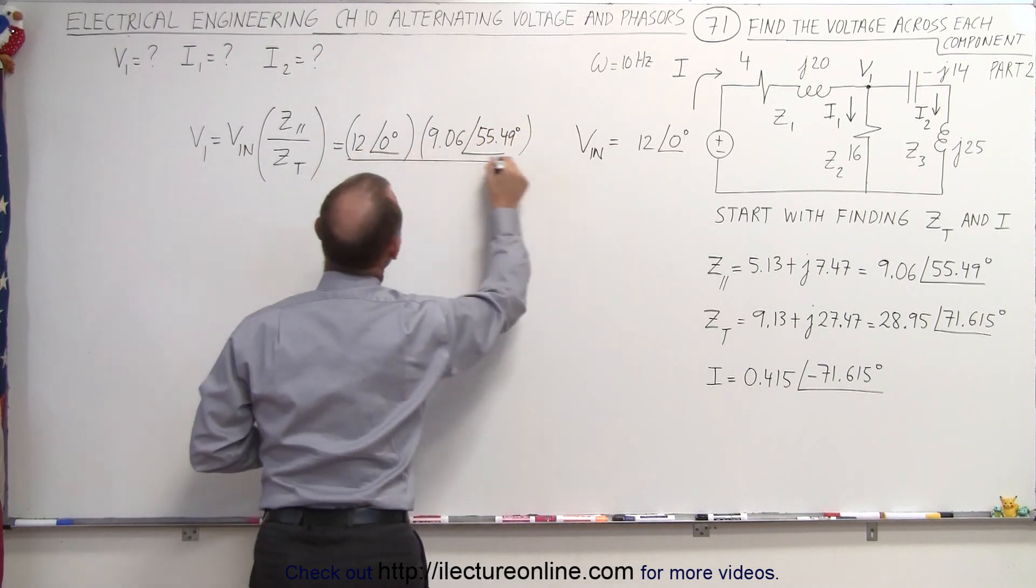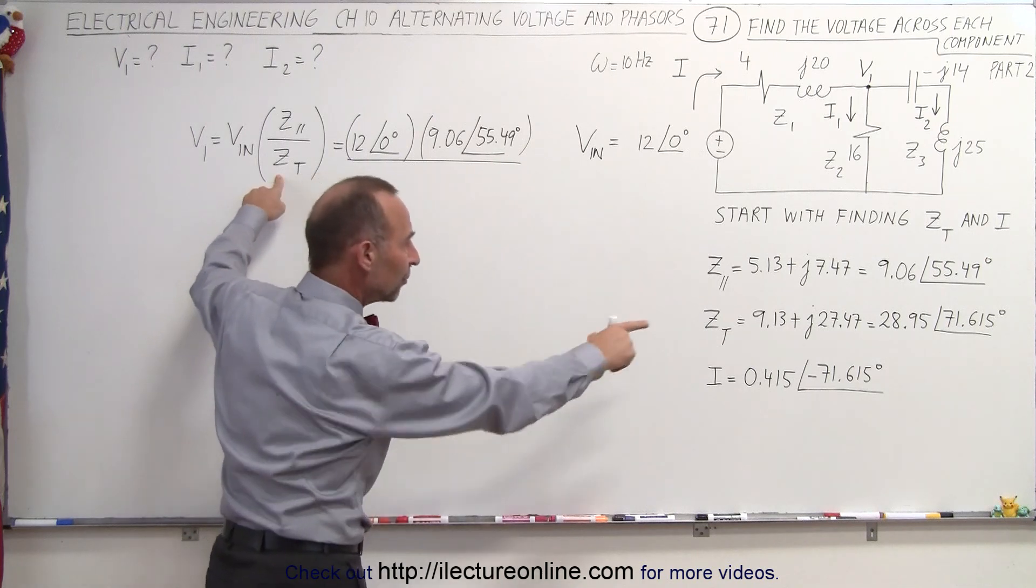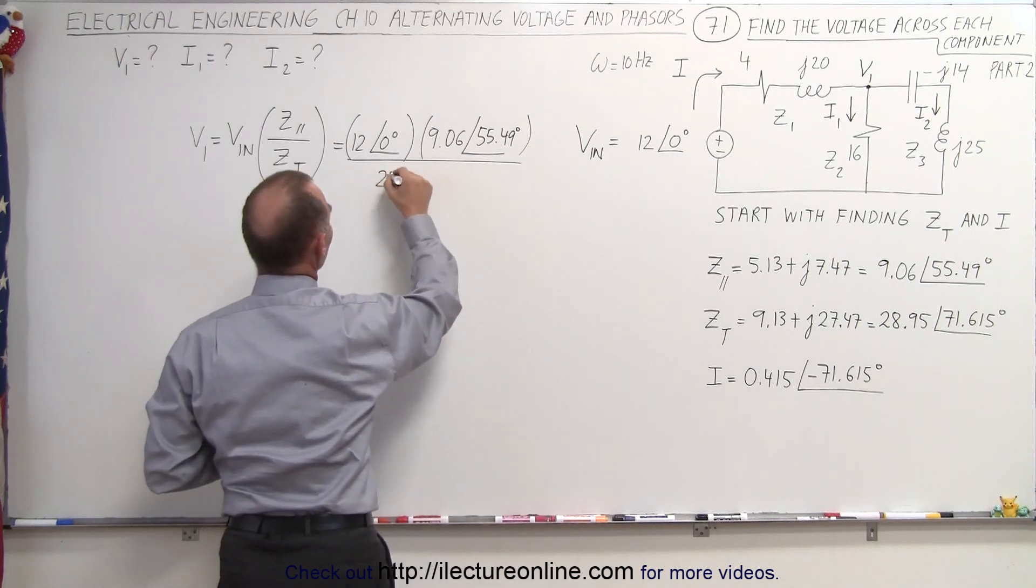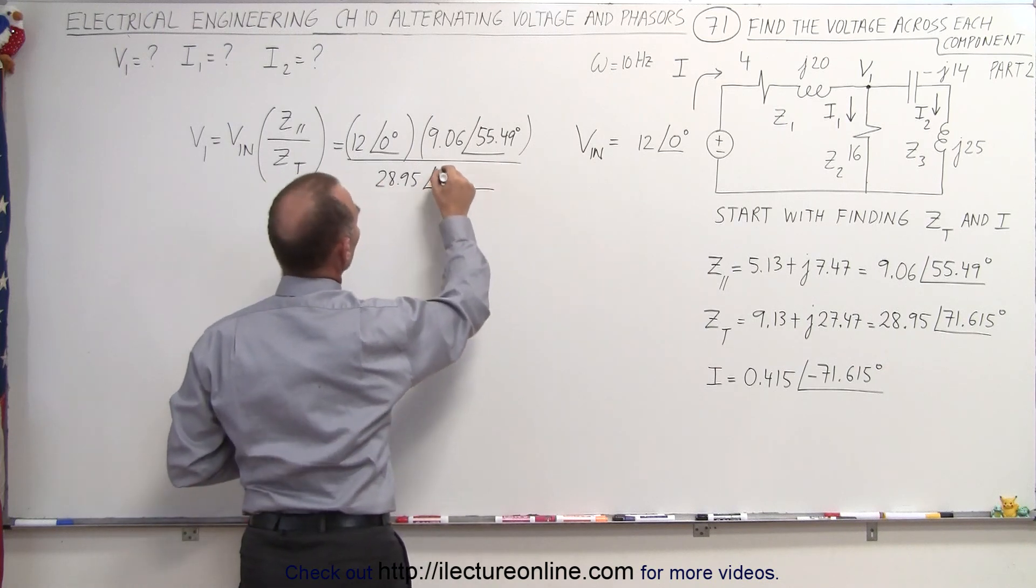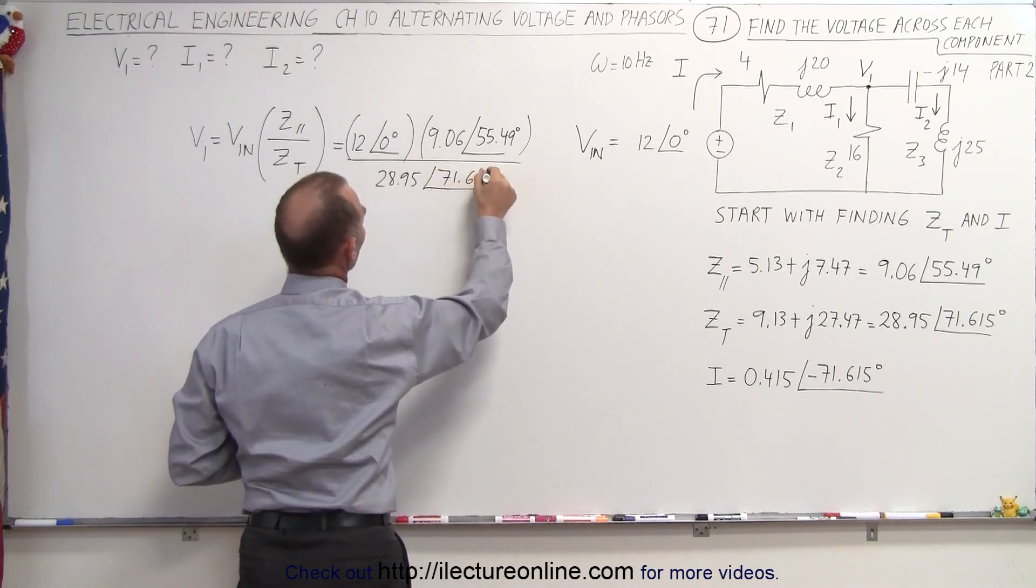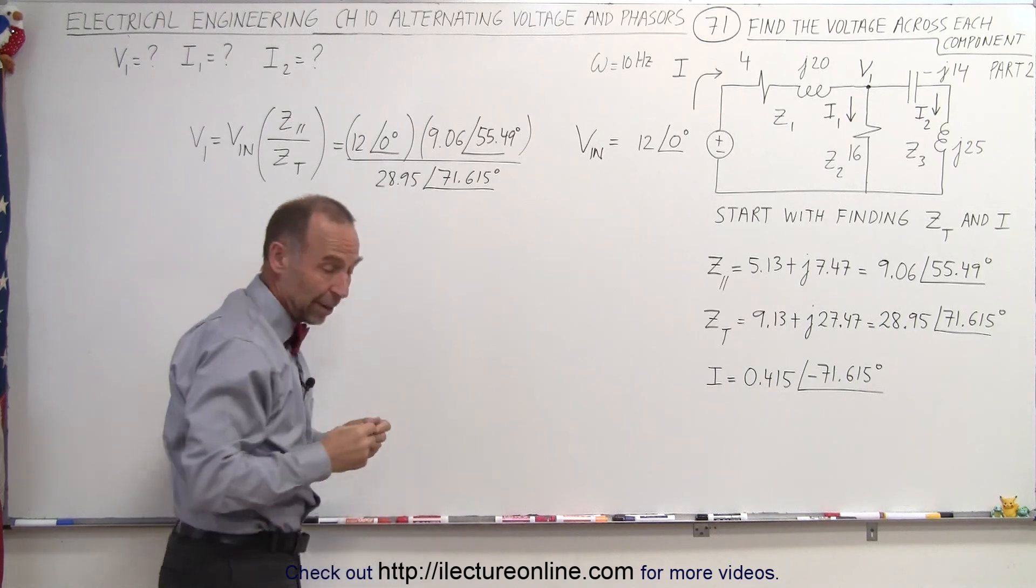And then we divide that by the total impedance, which is 28.95 with a phase angle of 71.615 degrees. All right, now we need a calculator.